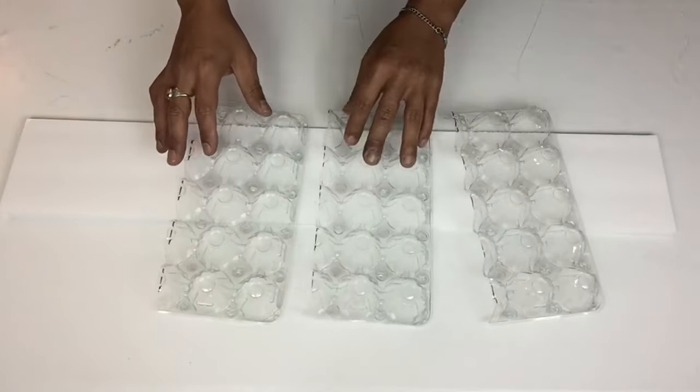Next I took another foam board and cut to size, and I also took three plastic clear egg holders and I cut them to size to fit the foam board and then I'll be gluing them on, repeating the same steps.